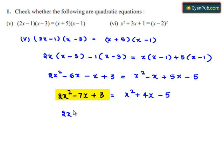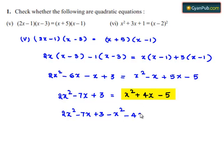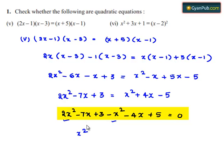So on the left hand side we have 2x² - 7x + 3, and on transposing the terms of the right hand side to the left hand side we get minus x² - 4x + 5 = 0. Combining: 2x² - x² = x², -7x - 4x = -11x, and 3 + 5 = +8.